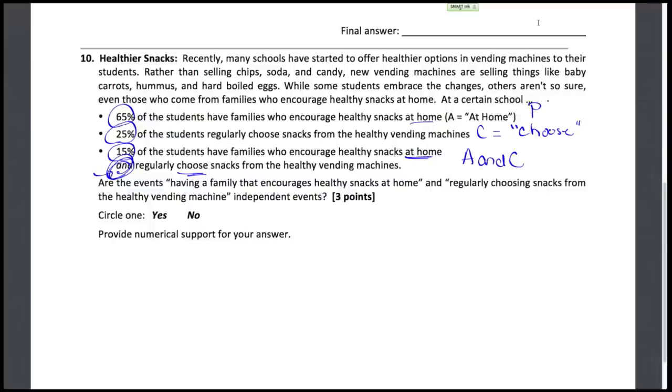In fact, we could put the probability of A, having a family who encourage healthy snacks at home, that chance is 65%. The probability that they actually choose healthy snacks at school through those vending machines is 25%. And the probability of both, that you've selected a student who both has the encouragement of healthy snacks at home and regularly chooses those kinds of snacks from the machines at school, that's about 15%. We could set up a table or Venn diagram, but what are we asked to work out? Are the events of having a family that encourages healthy snacks at home, what we called A, and the event regularly choosing healthy snacks from the vending machines, event C, are those two independent events?